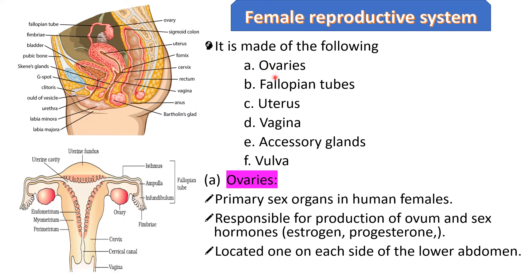We will talk about each part of the female reproductive system in detail. Before going to that, we better understand the labeling of the given picture. These are the pair of ovaries. These are the fallopian tubes. This portion is called the uterus. This part is called the vagina. There are some accessory glands — Bartholin glands — which you can see in this picture. The last part is the vulva, which is the external genitalia in human females.